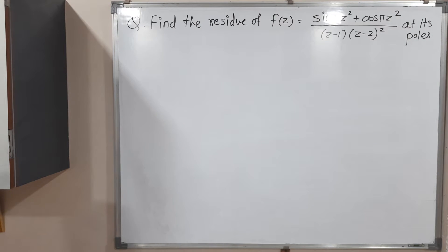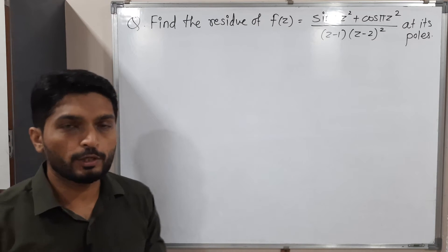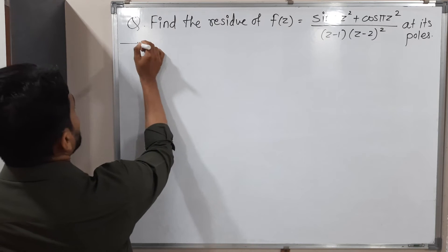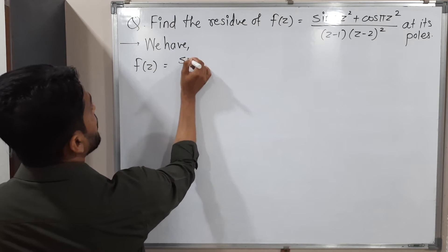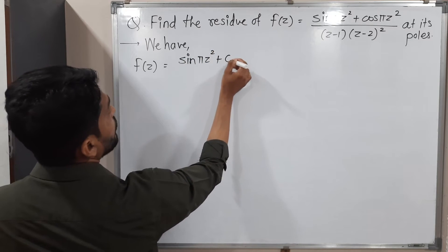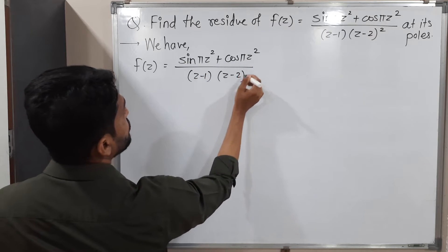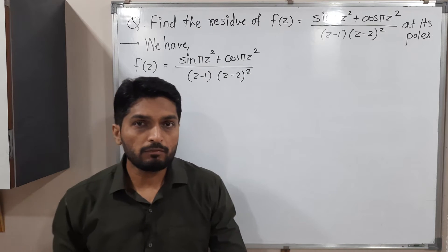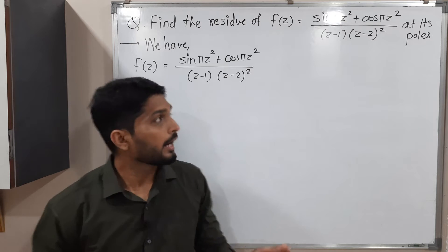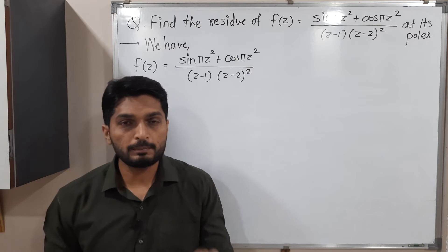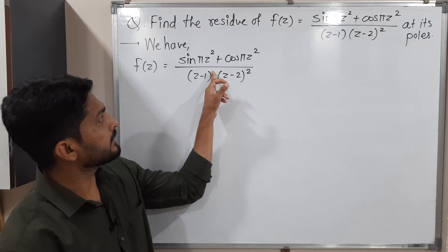In this video we are going to discuss this example. We have been given a function and we have to find its poles as well as find the residue. So let me write the given function as f of z. We have f(z) = sin(πz²) + cos(πz²) divided by (z−1)(z−2)². For what values of z does the denominator equal 0? If z=1, the first bracket is 0, and if z=2, the second bracket is 0. So z=1 and z=2 are singularities, and they are poles.